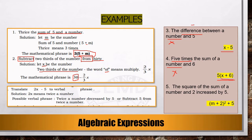Number five: 'the square of the sum of a number and two, increased by five.' Let us represent the number as m. 'Squared' refers to an exponent of two, 'sum' means plus, and 'increased by' means plus. So the sum of m and two is placed in parentheses and squared, then we add five. Therefore the mathematical phrase is (m + 2)² + 5.